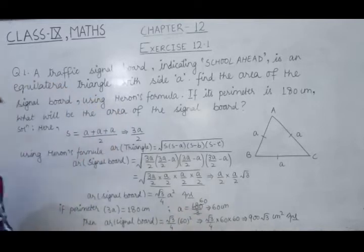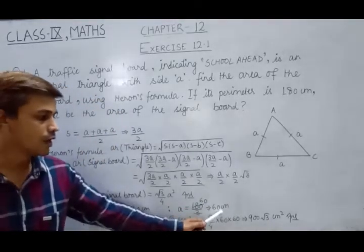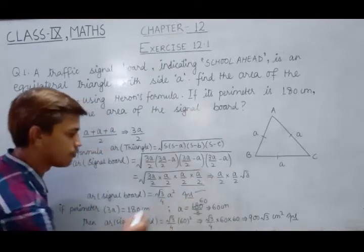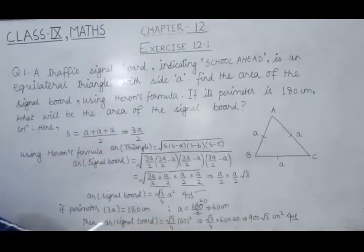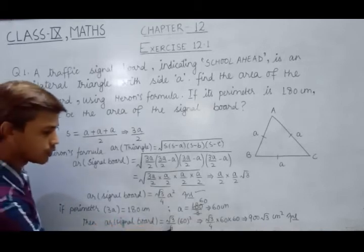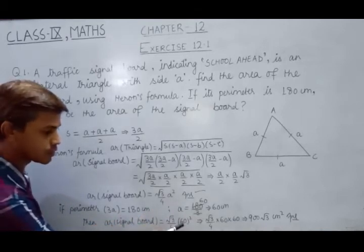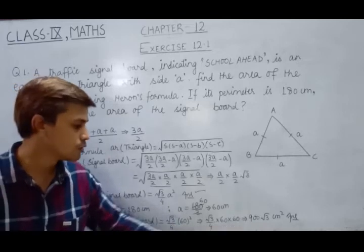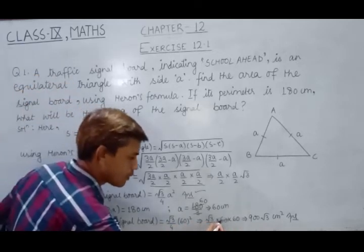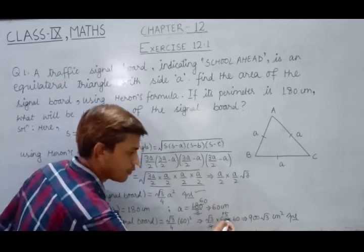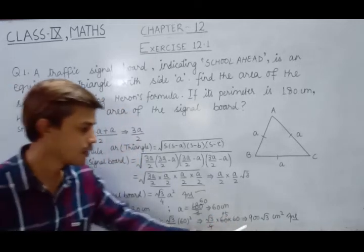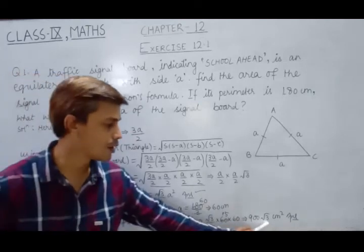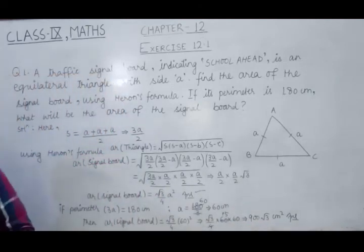Value of side a, we have 60 centimeter. Let's use this 60 centimeter in relation, root 3 upon 4 times a square. That's why area of signal board, we got, under root 3 upon 4 times 60 square. So it is root 3 upon 4 into 60 into 60. 60 divided by 4 is 15, and 15 into 60 is 900, along with root 3. So it is 900 root 3 square centimeter. That's it.